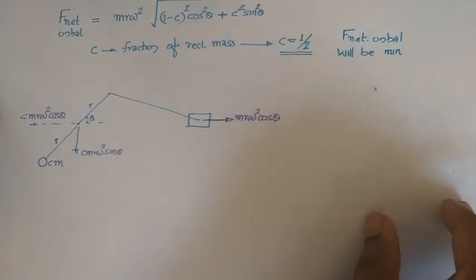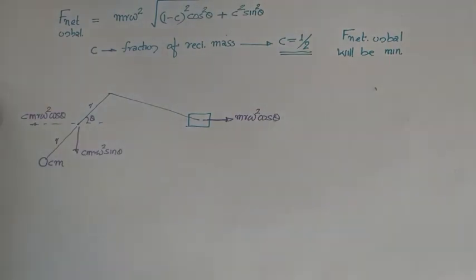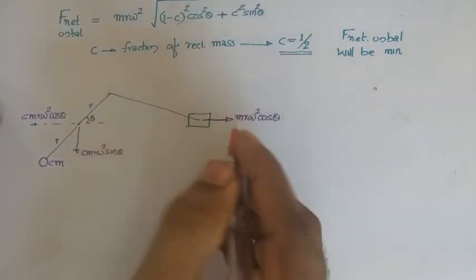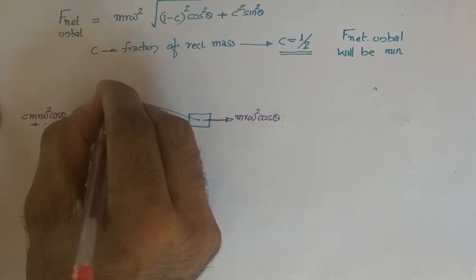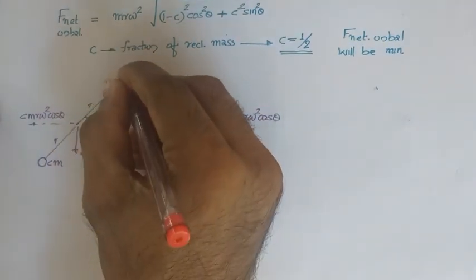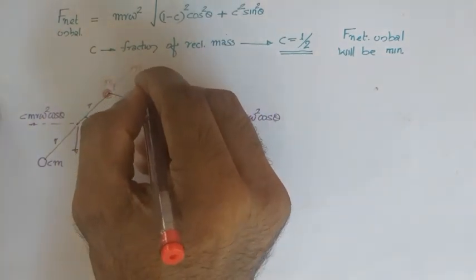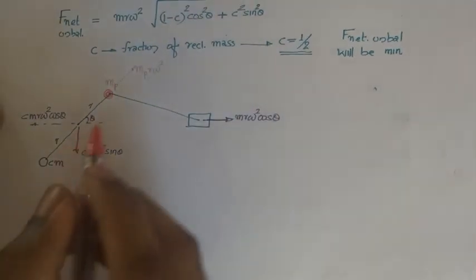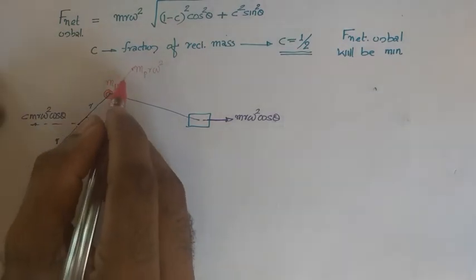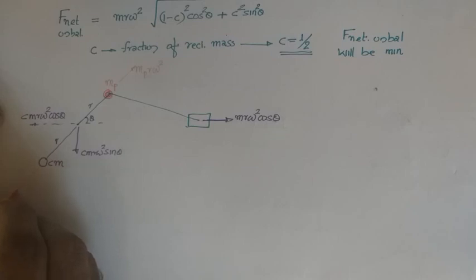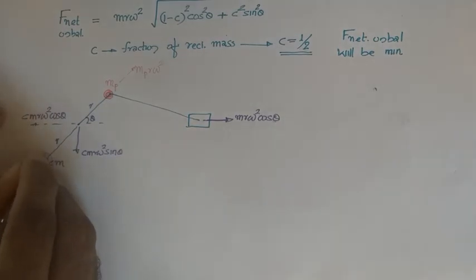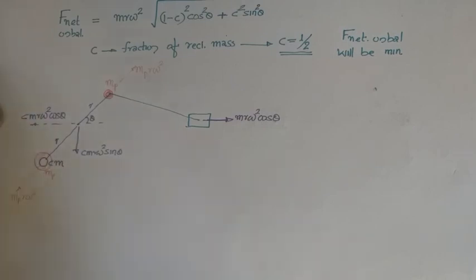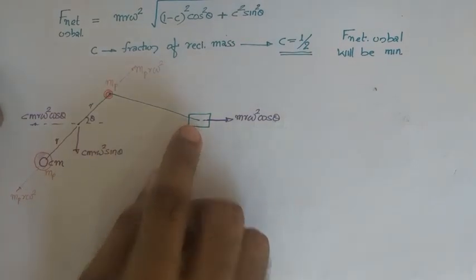Now consider the case where there is also a rotating mass at the crank pin, in addition to the reciprocating mass. Let the rotating mass at the crank pin be m_p. When rotating, it produces a centrifugal force of m_p·r·Omega². To balance this rotating mass, a counterbalancing force must be created in the opposite direction equal to m_p·r·Omega².